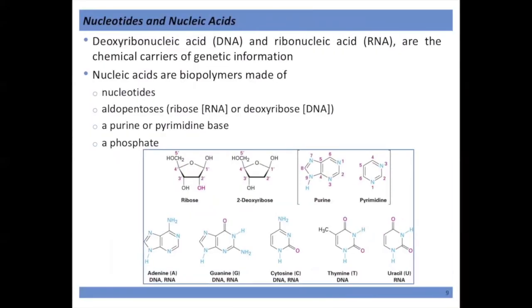So to summarize the components: nucleotides and nucleic acids are composed of ribose and deoxyribose sugars, and purine and pyrimidine bases — specifically adenine, guanine, cytosine, thymine, and uracil — and their respective macromolecule (DNA or RNA) is listed accordingly.